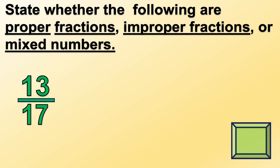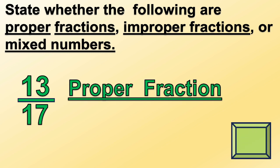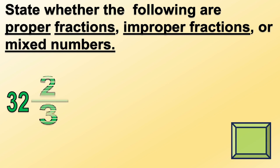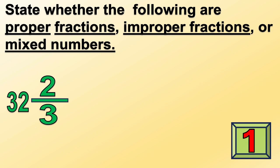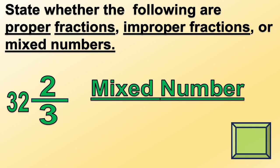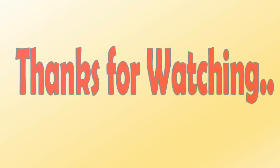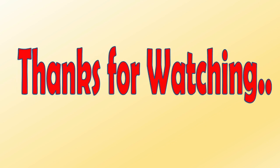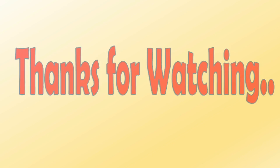Thirteen and seven-sevenths: time's up — the answer is proper fraction. Thirty-two and two-thirds: time's up — the answer is mixed number. That's all for now. I hope you enjoyed learning about identifying proper fractions, improper fractions, and mixed numbers.